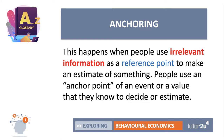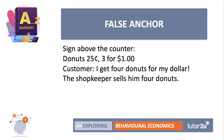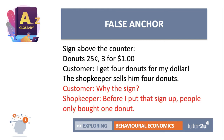Anchoring is the tendency to rely too heavily on the very first piece of information you learn or hear, often using irrelevant information as a reference point. Some businesses use false anchors — a great example: a sign above the counter reads 'Donuts, 25 cents each or three for one dollar.' The customer thinks they can get four donuts for a dollar and buys four instead of three. The shopkeeper notes that before the sign went up, people only bought one donut. A false anchor can act as a trigger to change people's behaviour.